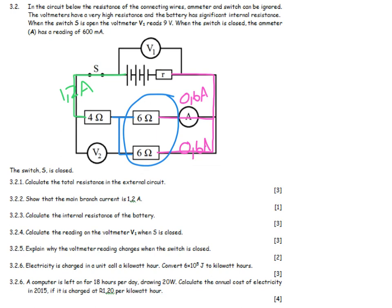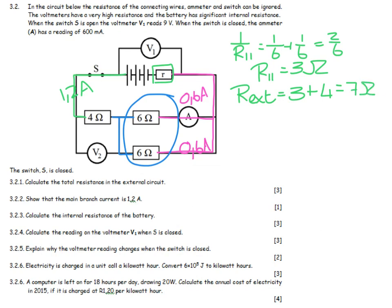Calculate the total resistance of the external circuit. This little R over here is part of the internal circuit, so we're not interested in that. 1 over R parallel equals 1 over 6 plus 1 over 6, which is therefore equal to 2 over 6. Invert it, and you get R parallel equals 3 ohms. On to the total external, I've got the parallel network, 3, plus the series resistor, 4, and I'll end up with 7 ohms.